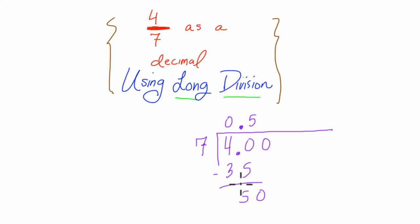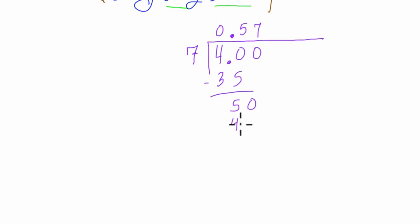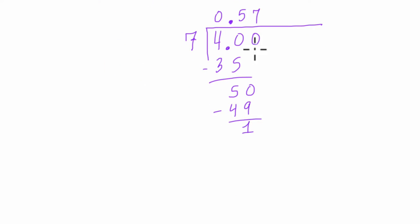Now think 7 going into 50, which is really 7 going into 0.5 here. And it goes into 50 how many times? Well, 7 times. And 7 times 7 is 49. We subtract, get a 1, and keep carrying our 0s down here.